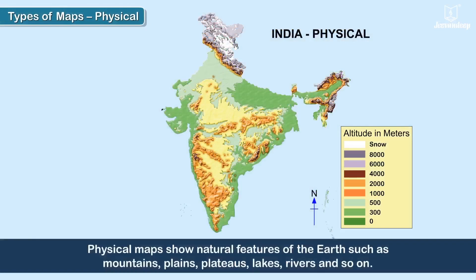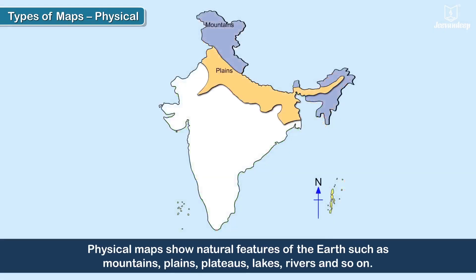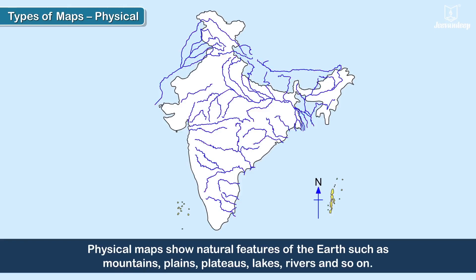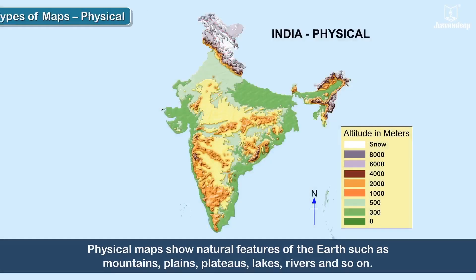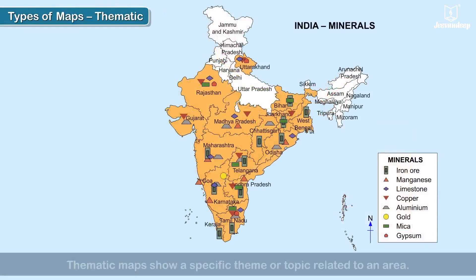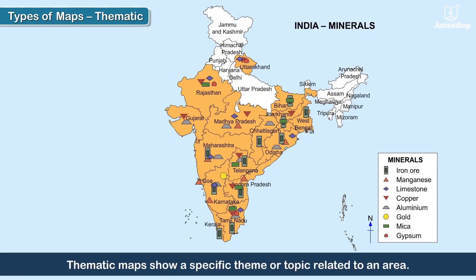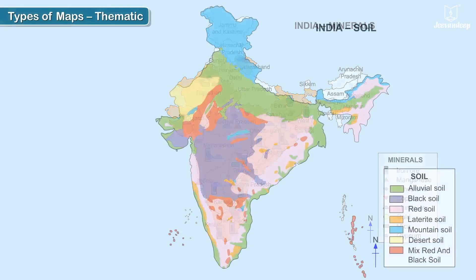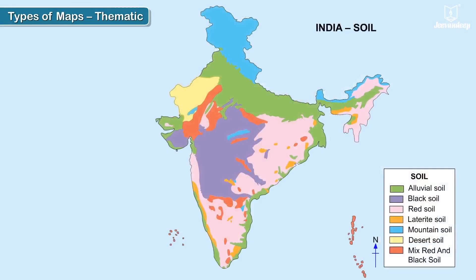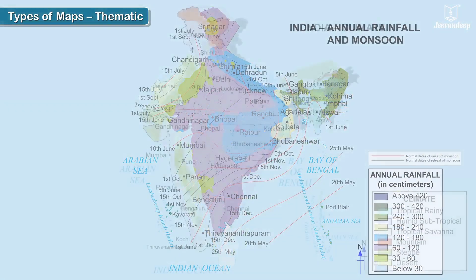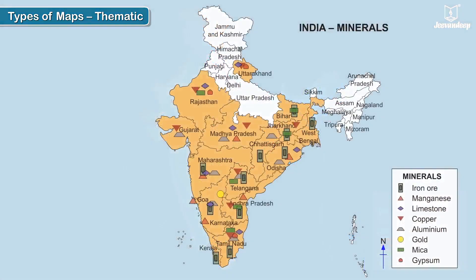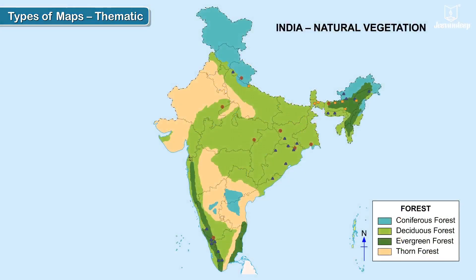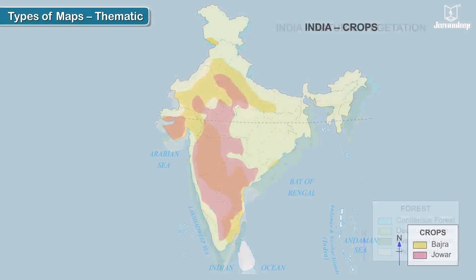Physical maps show natural features of the earth such as mountains, plains, plateaus, lakes, rivers, and so on. Thematic maps show a specific theme or topic related to an area, such as kind of soil, rainfall, climate, mineral deposits, natural vegetation, and crops.